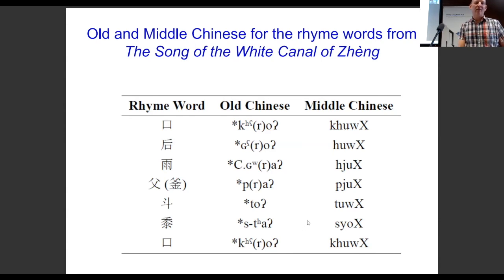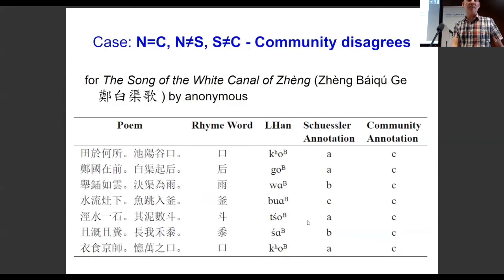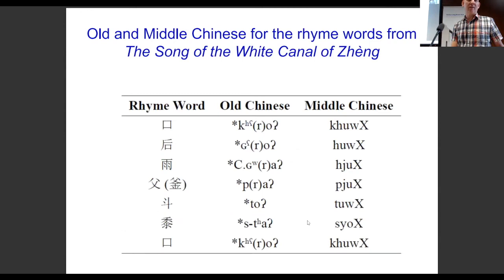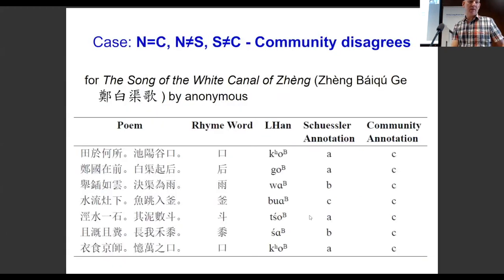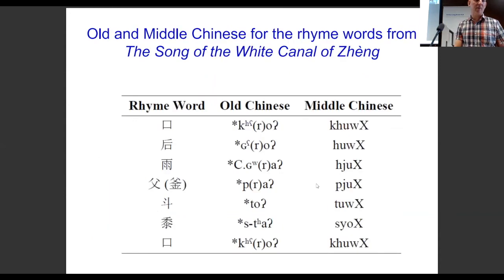It's interesting to think: what does this mean? Does it mean the Schussler annotator is correct, or is it too close to Old Chinese? I actually don't know the answer — it's something I'd like to look into. Even in Middle Chinese you see A, A, B, B, A, C, A. There's a weirdness with one character. The key question is Schussler's splitting of these A's — is he correct that Late Han had this split? We don't know, but this data will probably end up showing us.